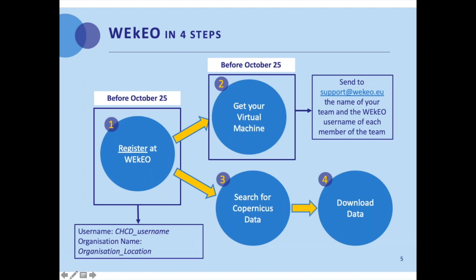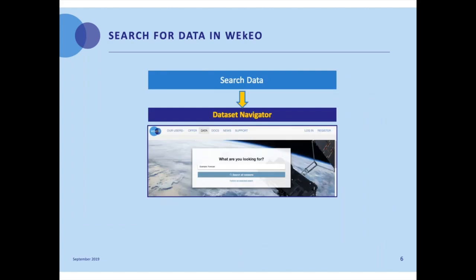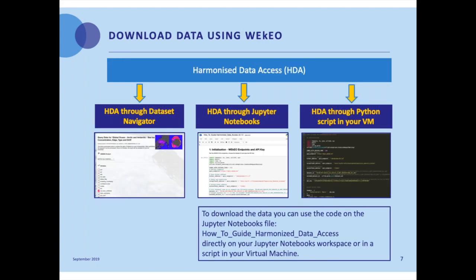The third and fourth steps are about searching and downloading data. You don't need to worry much about them now — you will have enough time to access the data you need during the event. Once you have selected the challenge of your choice, you and your team will have to search for the datasets most suitable for your application. The tool used to search for datasets in Wikeo is called Dataset Navigator. Once you have found the dataset of interest, you can download it through the harmonized data access option available on Wikeo, using the Dataset Navigator, Jupyter Notebooks, or a Python script in your virtual machine.